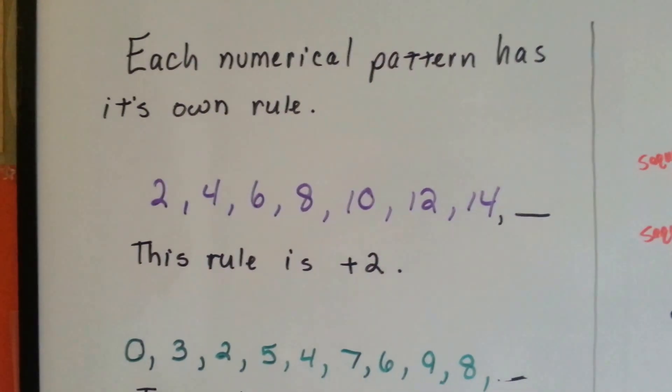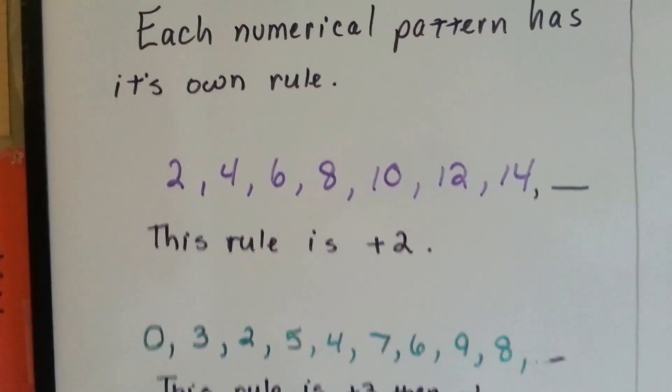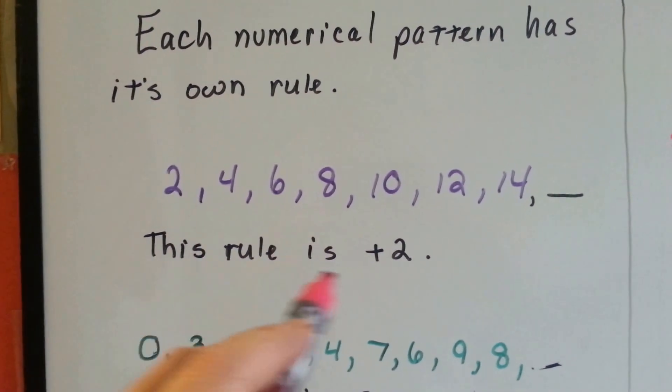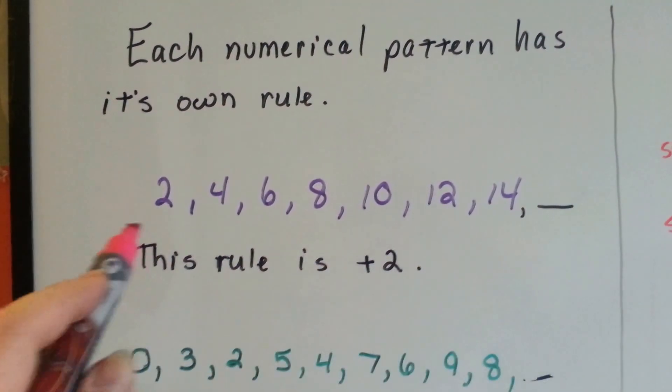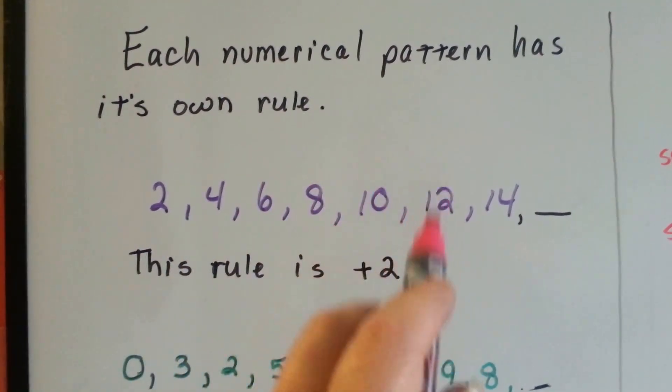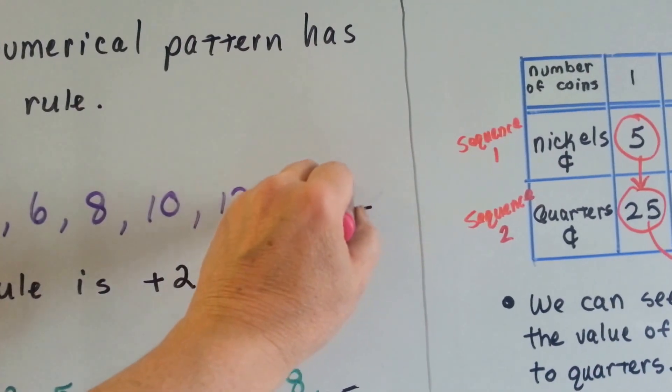Each numerical pattern has its own rule. This one is plus 2. The rule for this sequence right here: 2, 4, 6, 8, 10, 12, 14, 16. It goes up by 2.